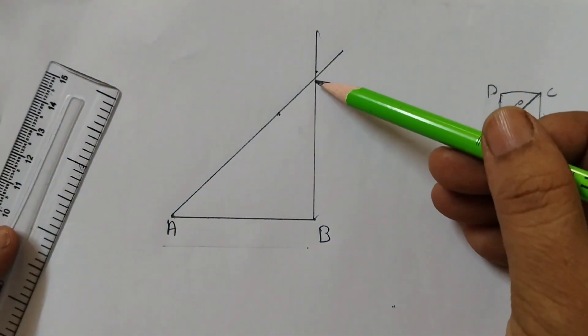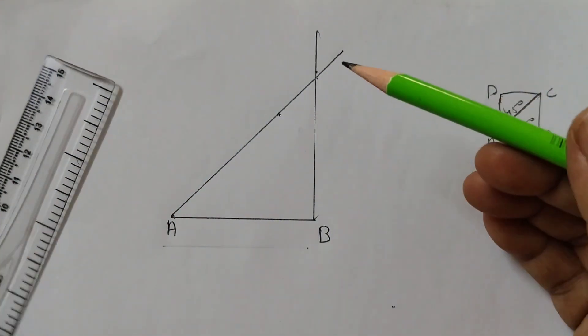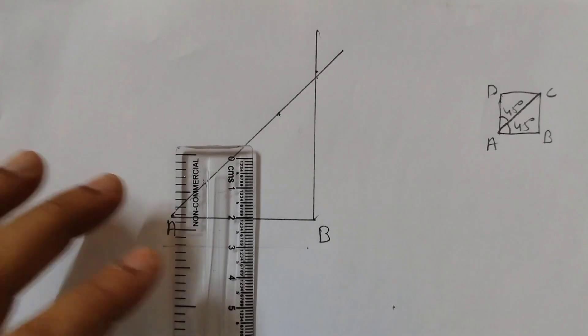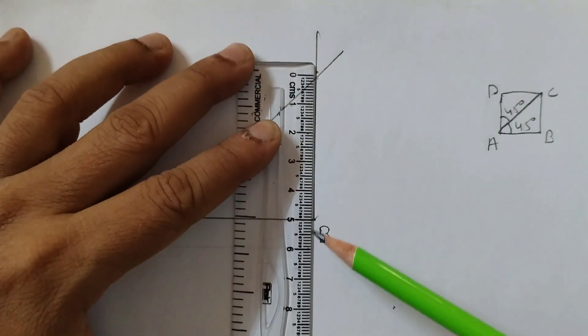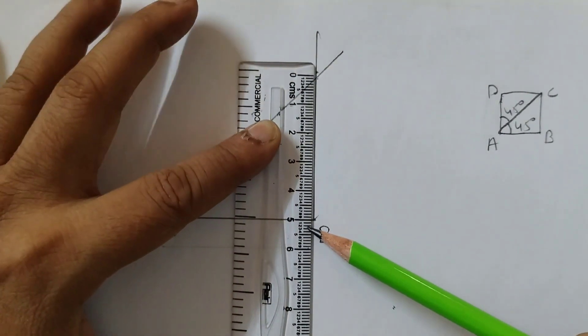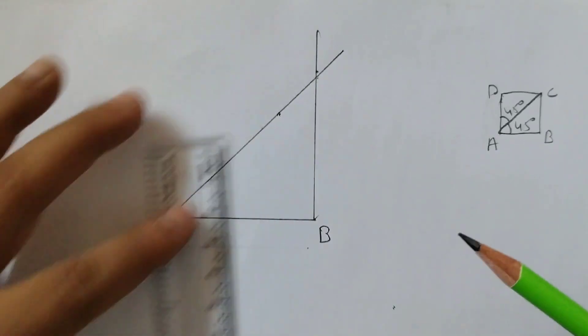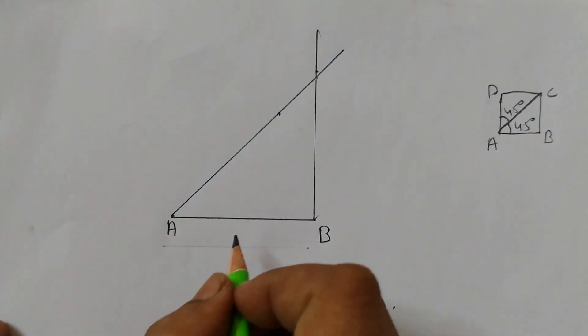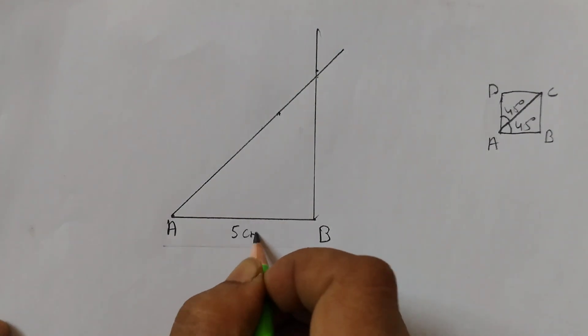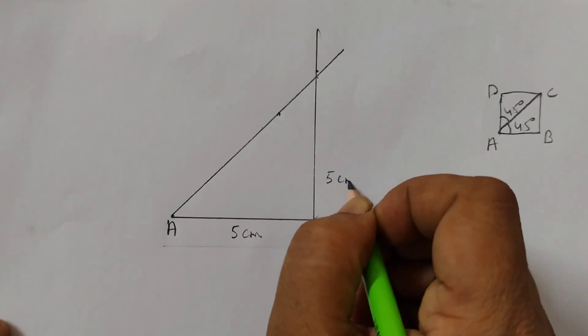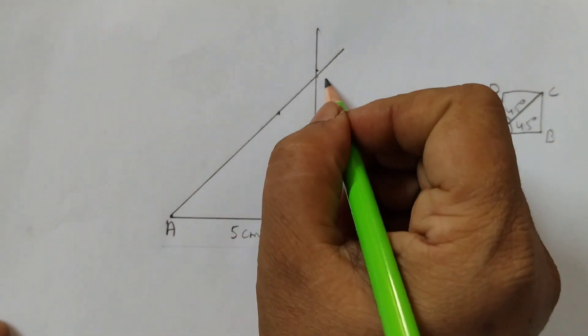Now it is cutting here at this point. Let us measure and see what is the length. Do you see it is 5 centimeters, exact 5 centimeters. This is also 5 centimeters that we took, and this is also 5 centimeters. Label this as C.